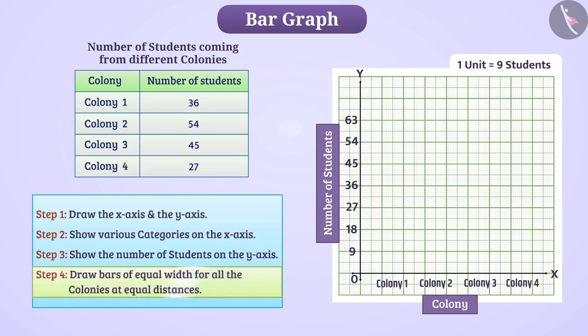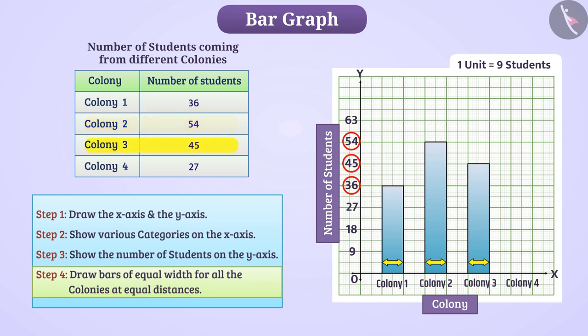Now, we will draw a bar. In the bar graph, we represent the data in the form of bars. The number of students coming from colony 1 is 36. So, we will draw the bar in such a way that its length should be numbered 36. In the same way, we will draw bars of equal width for all the colonies at equal distances.